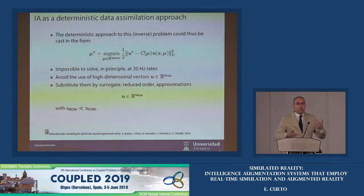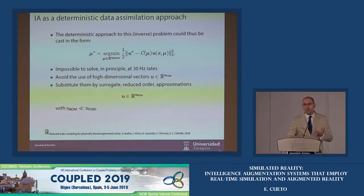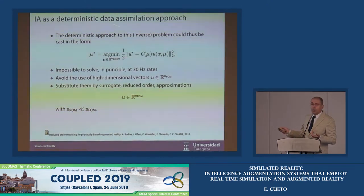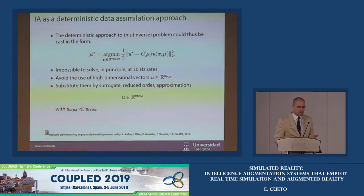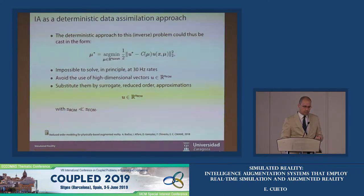We cast the problem in the form of an inverse problem, so that the set of parameters μ* that best explain the physics taking place in your video are those that best explain your observation. That's a classical inverse problem, but one you need to solve at least 30 times per second. For very large, detailed, fine-discretized models, 30 times per second is too much. Our solution consists in using reduced-order modeling to reduce the number of degrees of freedom by using surrogate models that alleviate the computational cost.